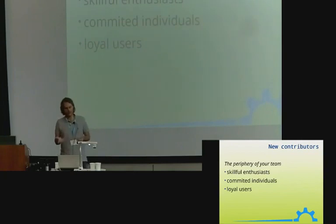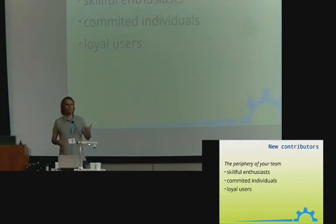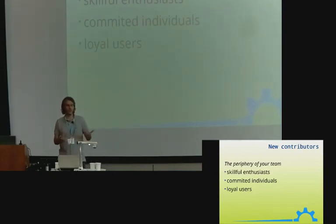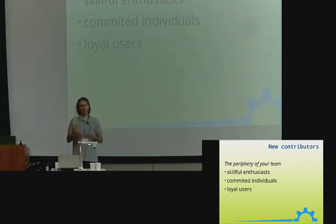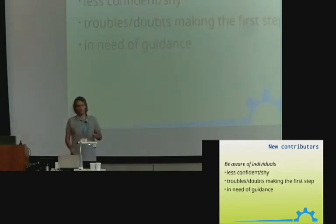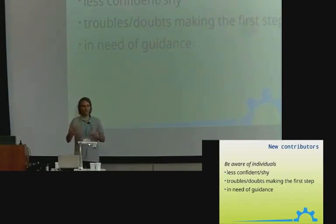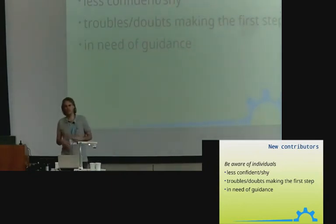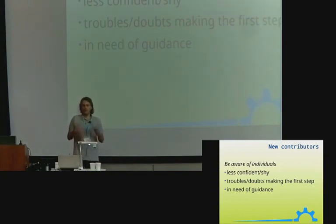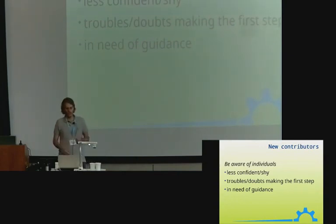Where do you find new contributors? The reality is that they are usually in the periphery of your team — skillful or enthusiastic users you might have around: people spending time to report bugs, maybe test your releases, share their ideas, respond to other users in your forums or channels. Keep an eye on those people as they are the potential new contributors — the active ones who actually care about your project. Also pay attention to people who are a bit more in the shadows, shyer, without a loud voice, but still around. They might find the whole thing intimidating, but guiding them into your project can make wonders.